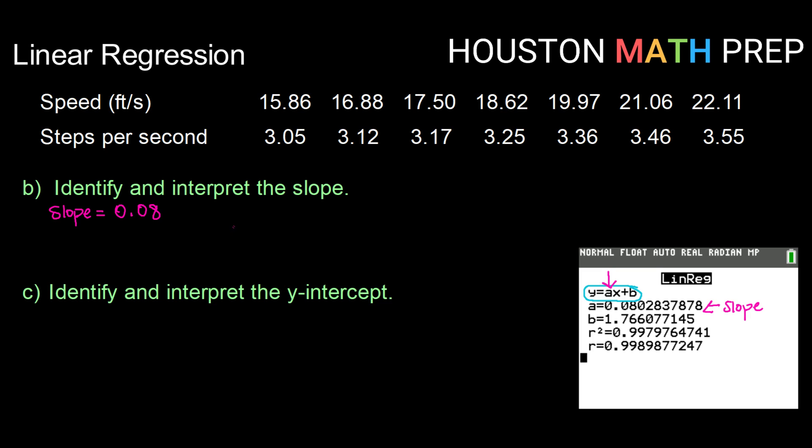Now remember, back from algebra, just a quick review, that slope is change in y over change in x. So in this case we've chosen to use steps per second as our y and speed as our x. So this is change in steps per second over change in speed. And so our slope is 0.08 divided by 1.